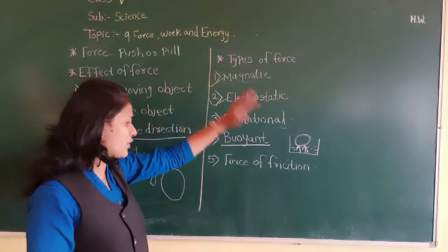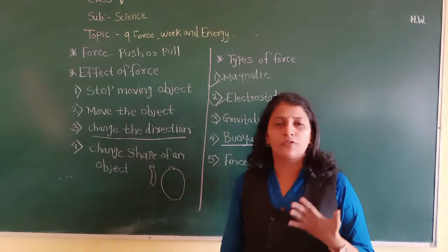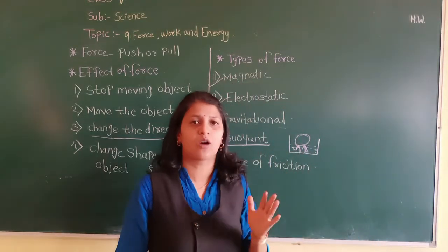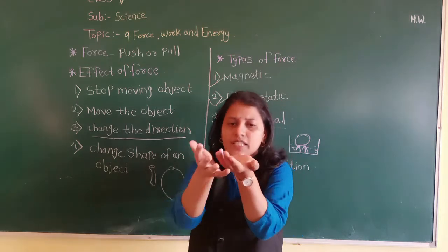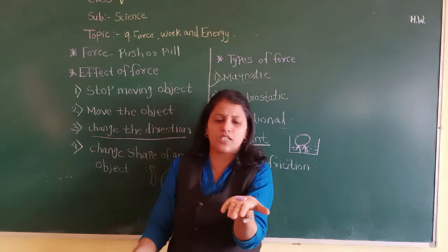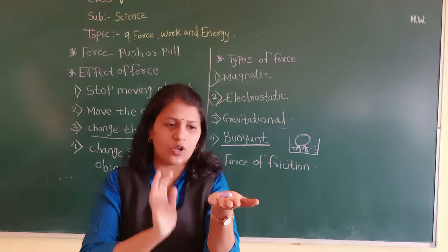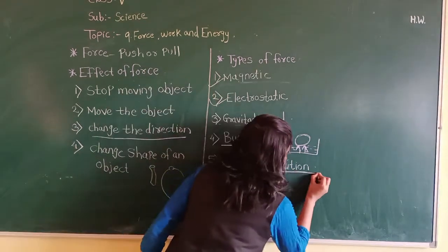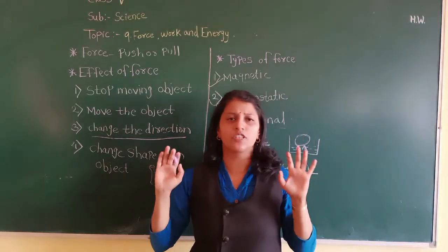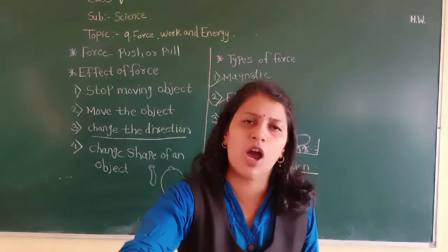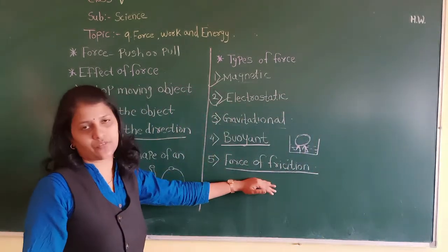The last type of force is the force of friction. The force of friction is the force which slows down the movement of an object. For example, when a top is rolled, after some time it will stop — that is because of the force of friction. Similarly, when you are paddling a bicycle and you stop paddling, the cycle moves some distance and then stops at a particular point — because of the force of friction.